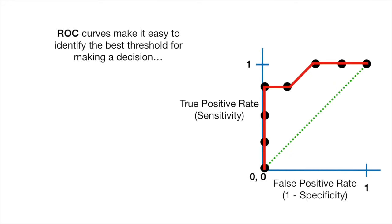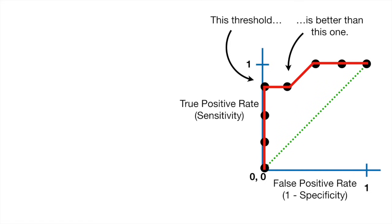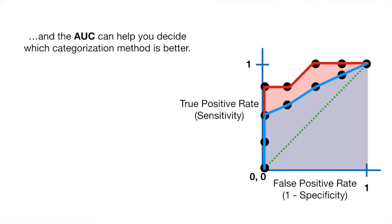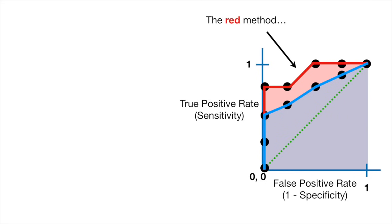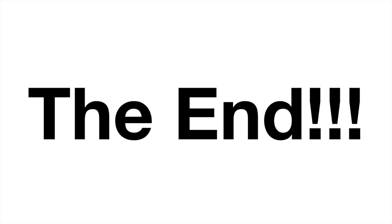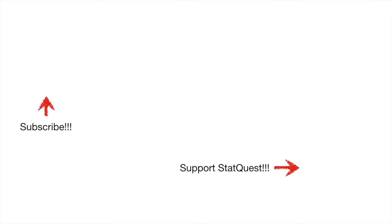In summary, ROC curves make it easy to identify the best threshold for making a decision, and the AUC can help you decide which categorization method is better. Hooray! We've made it to the end of another exciting StatQuest. If you like this StatQuest and want to see more, please subscribe. And if you want to support StatQuest, consider getting a t-shirt or a hoodie, or buying one or two of my original songs. Until next time, quest on!